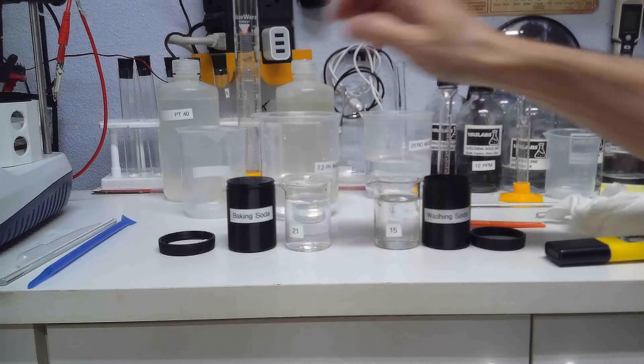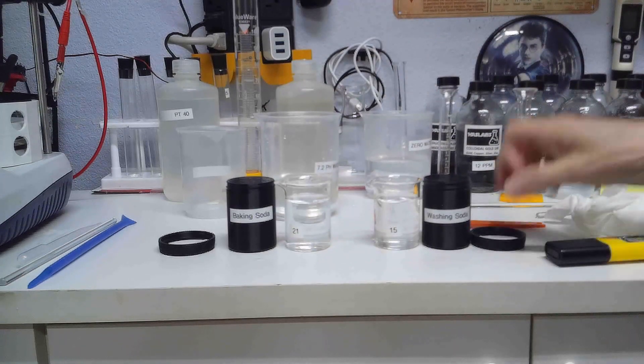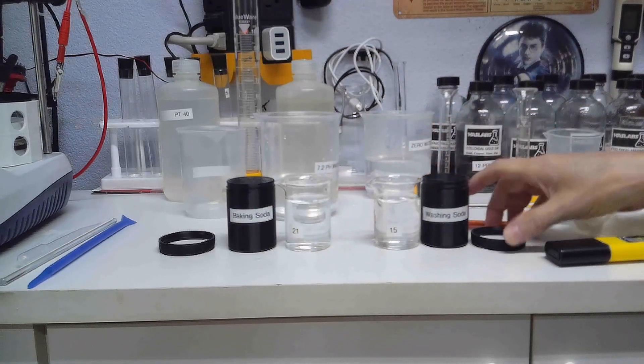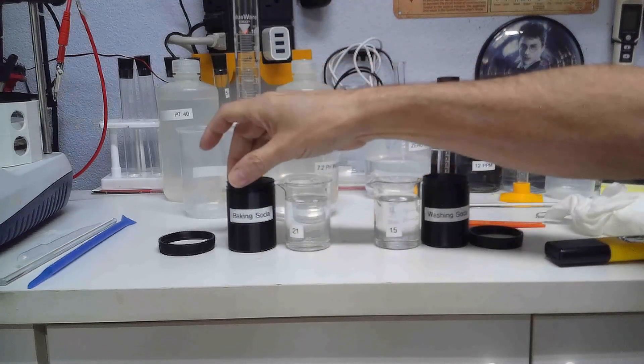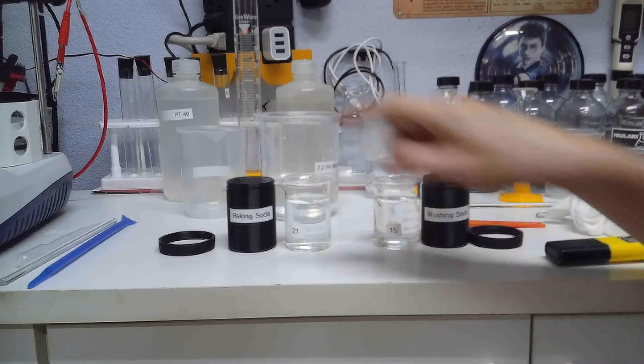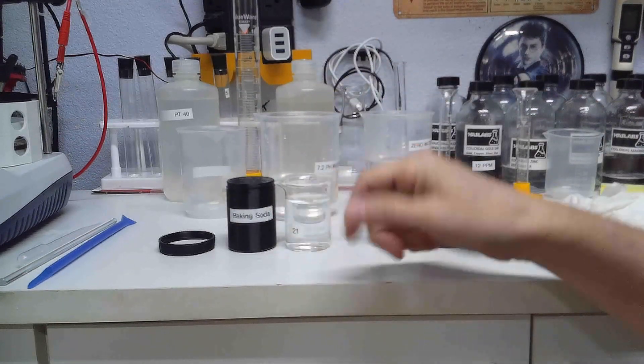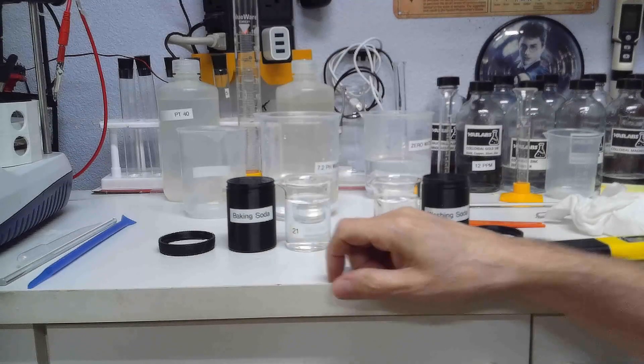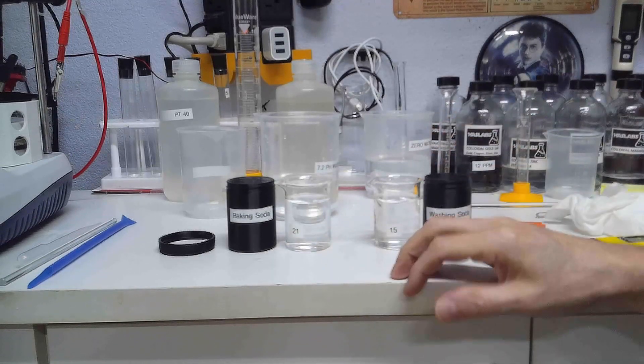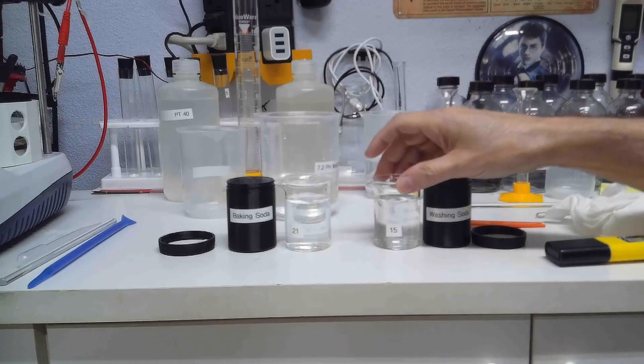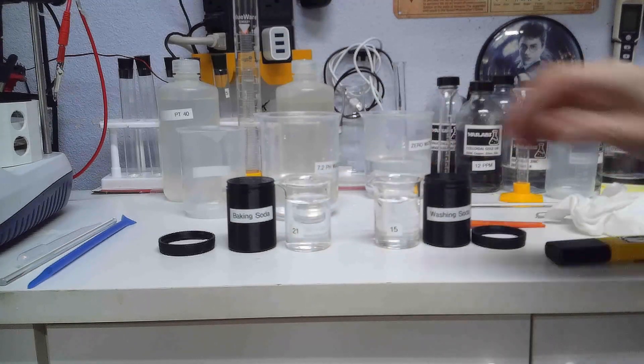Now in some of the things you do in your experiments you may require a higher pH and baking soda will only get you up to 8.5. The washing soda will get you to nearly 11 and so you may need to use washing soda for some experiments.